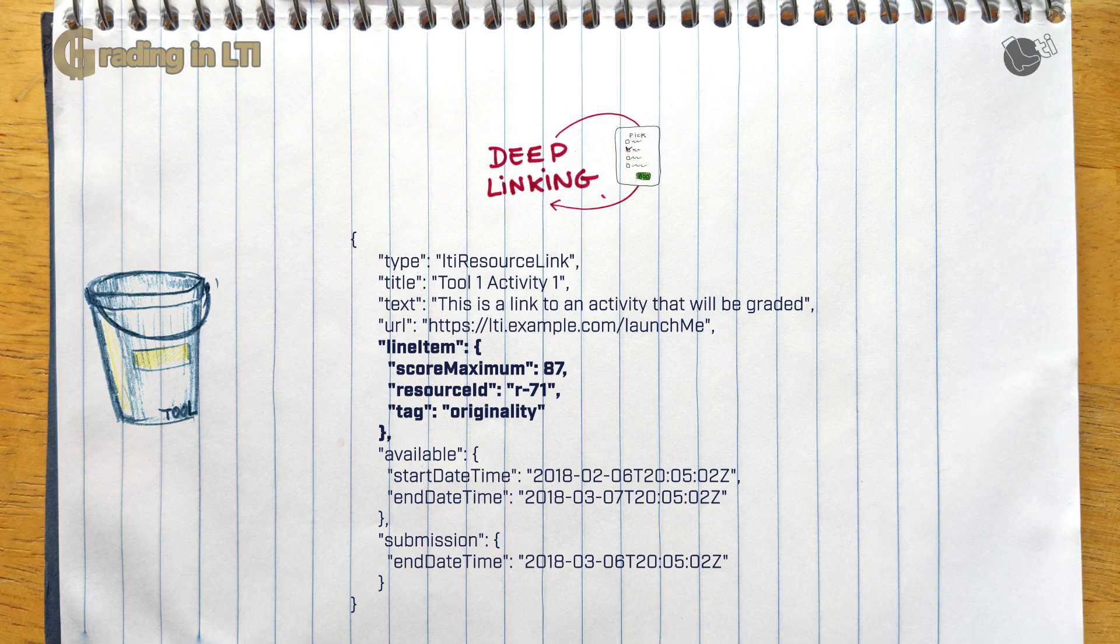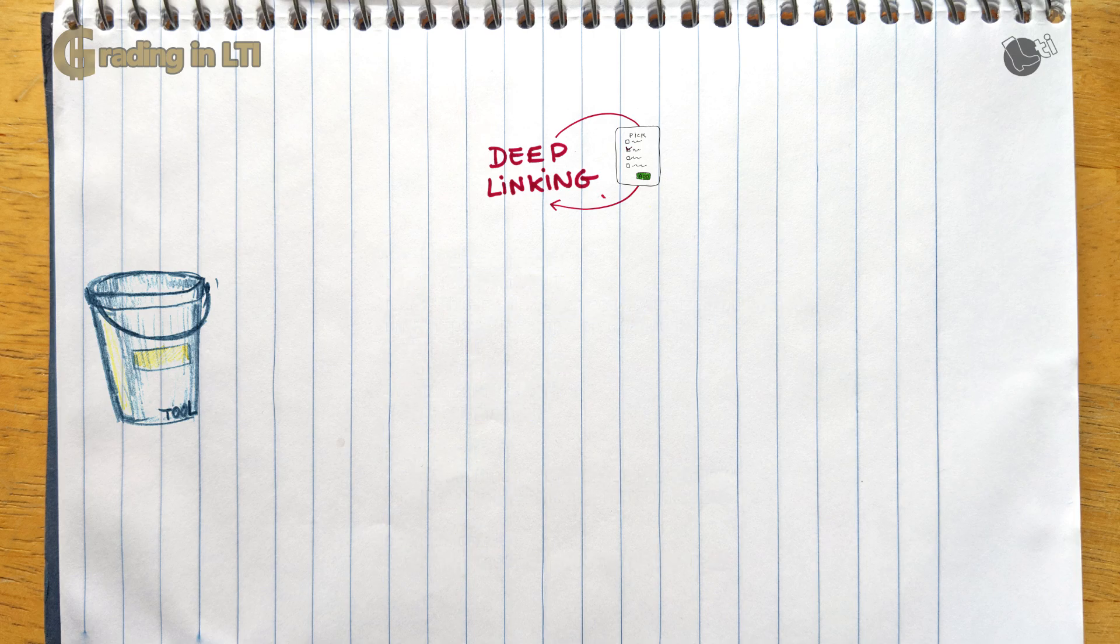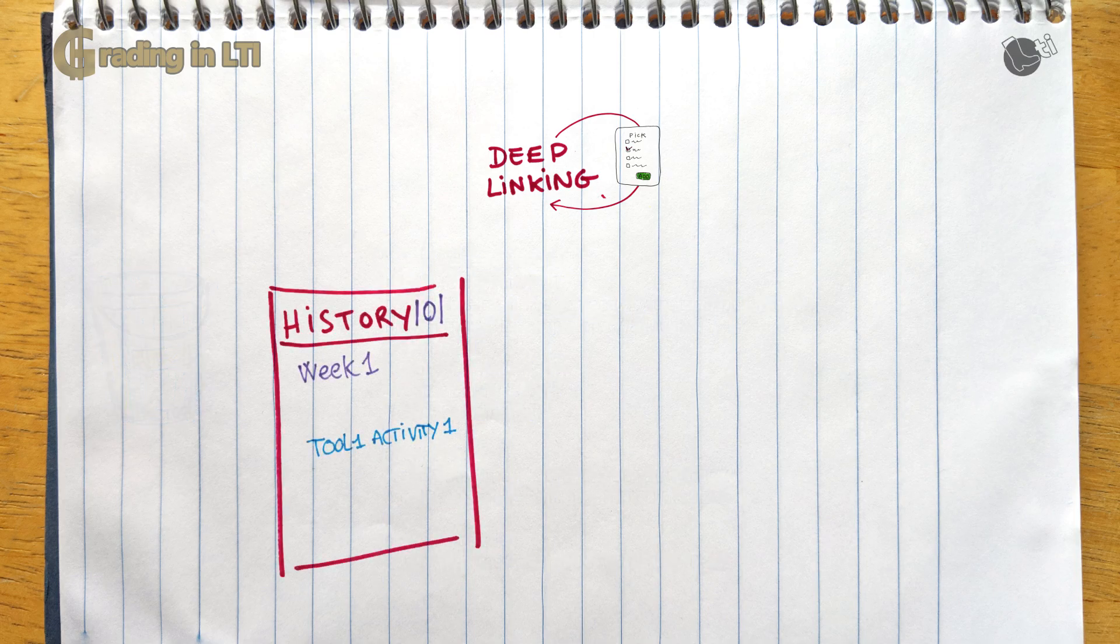As you see in this example, the tool indicates the maximum points for that activity. It also includes the resource ID that is an identifier for that line item from the tool perspective. So remember, this resource ID will come back to it very soon. So when the link is created, the platform will also create a line item for it. That means it will create a gradebook column for it.